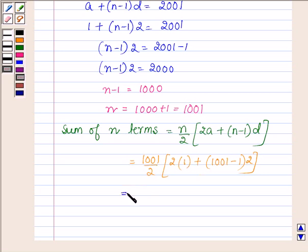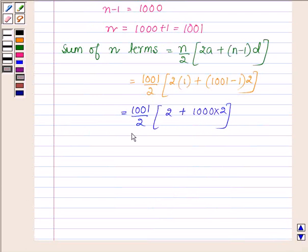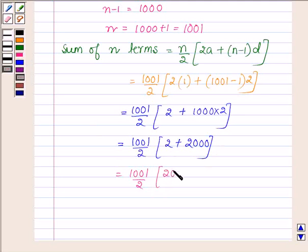So this is equal to 1001 upon 2 into 2, which is further equal to 1001 upon 2 into 2 plus 2000, which is further equal to 1001 upon 2 into 2.